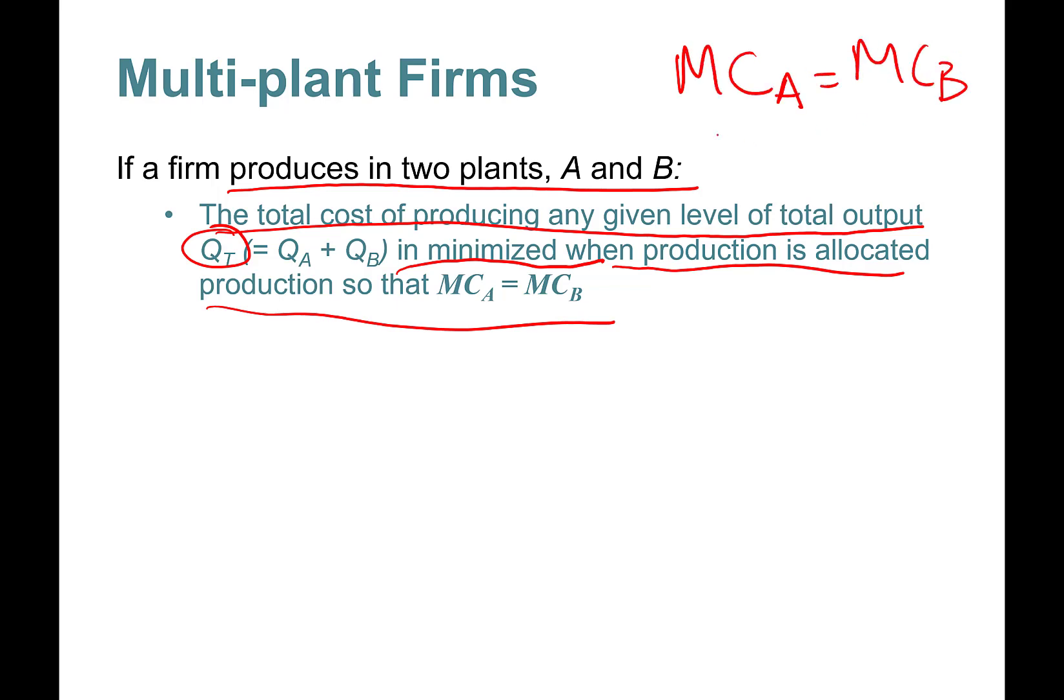What if I have more than two plants? You produce such that marginal costs are equal to each other. Let's say the marginal cost of producing a dozen glasses in plant A is $10, and in plant B it's $6. What you should do is actually produce more in plant B and lower the production in plant A.